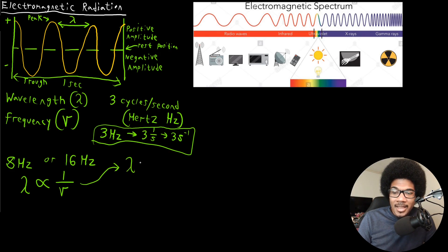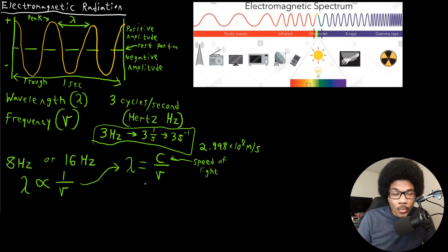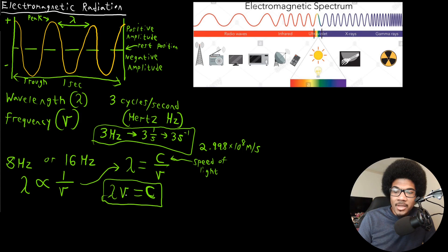In order to turn this into an equation, you need a proportionality constant — that constant is the speed of light. So lambda equals C over nu, where C is the speed of light: 2.998 times 10 to the 8 meters per second. This gives us an equation to relate wavelength and frequency via the speed of light: lambda times nu equals C.